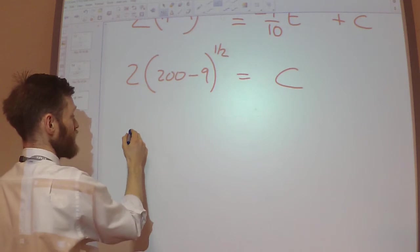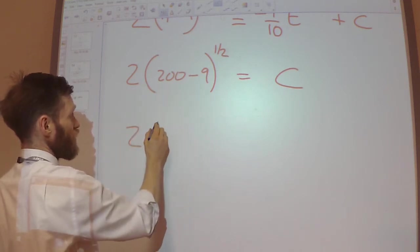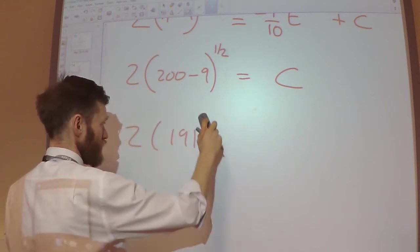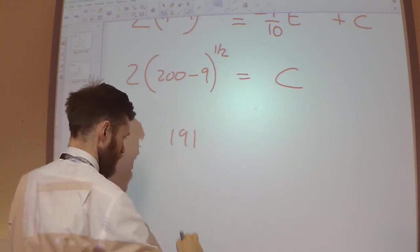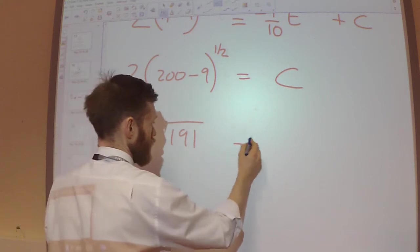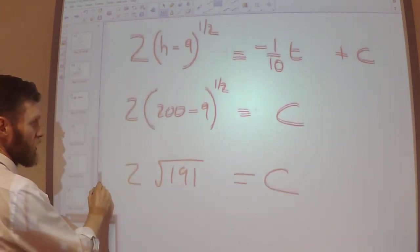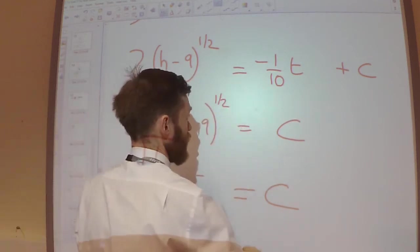So, my constant is 2 lots of 200 minus 9 square rooted. So 191 square rooted. So, 2 lots of root 191. That's my constant. Which I can now put that in up here.